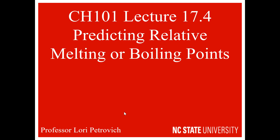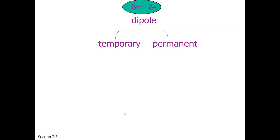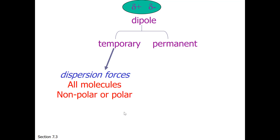Now that you've seen all the pieces, it's time to predict relative melting or boiling points based on intermolecular forces. As a reminder, intermolecular forces result because there is an unbalanced charge in the molecule or dipole. That dipole may be temporary, which we call dispersion forces. All molecules have dispersion forces, whether they are polar or nonpolar.